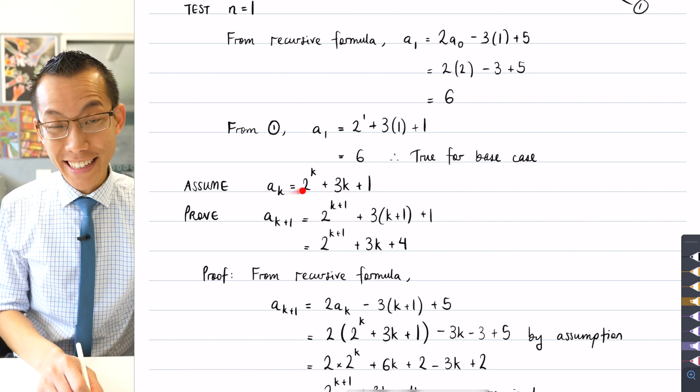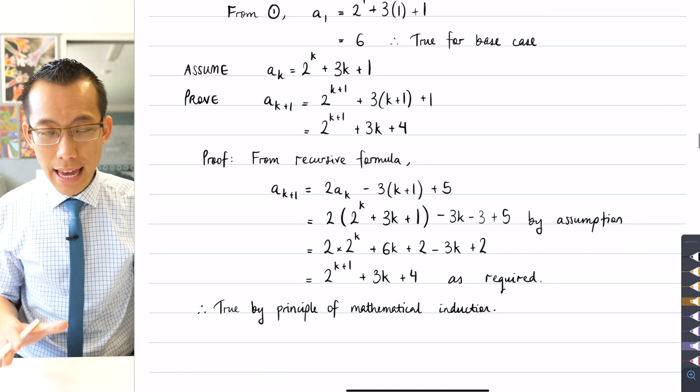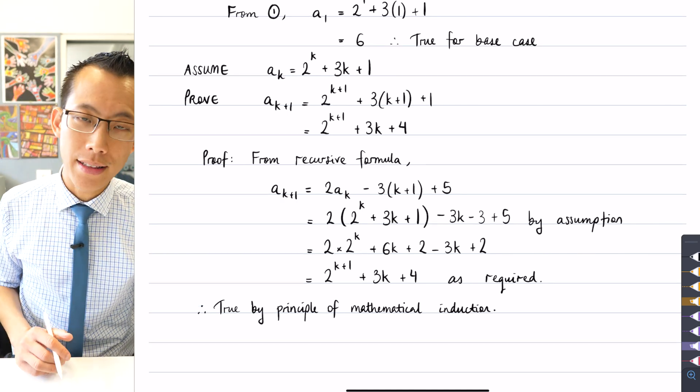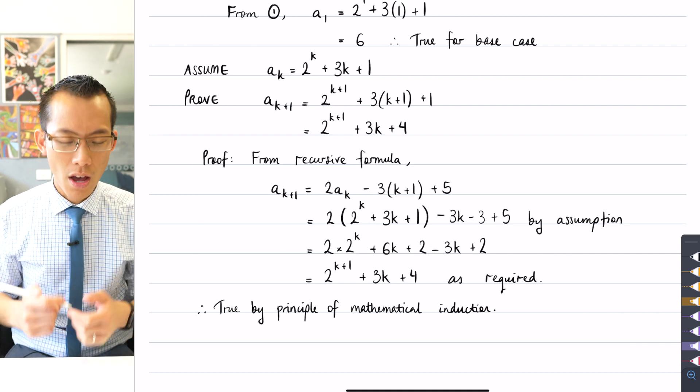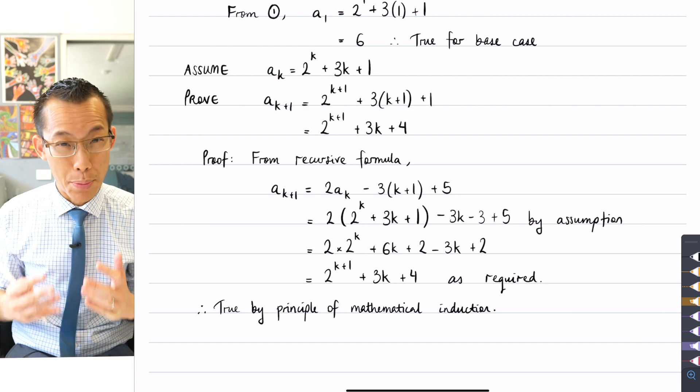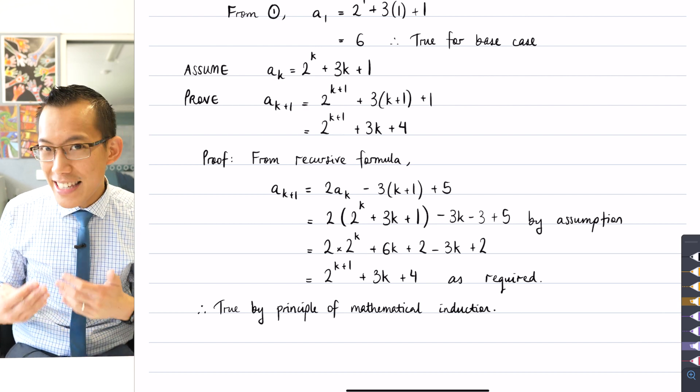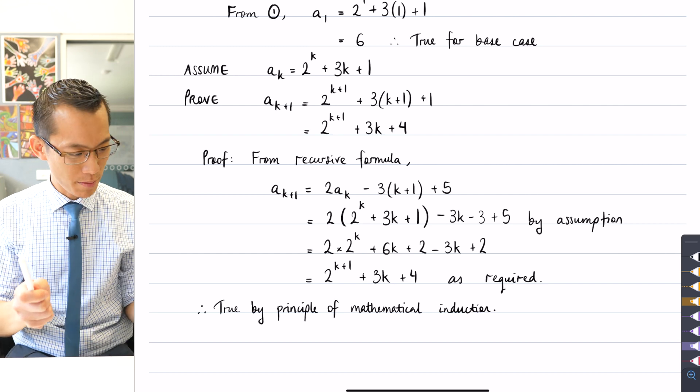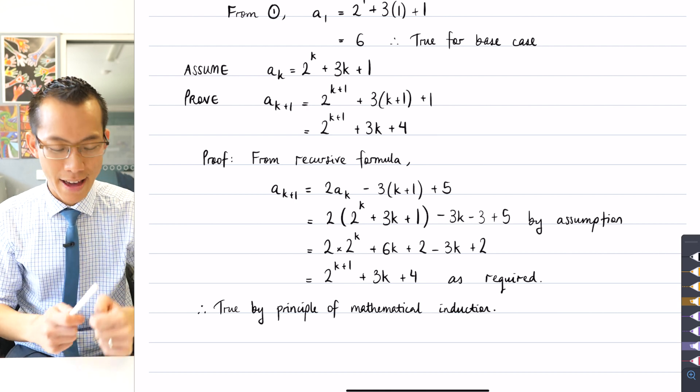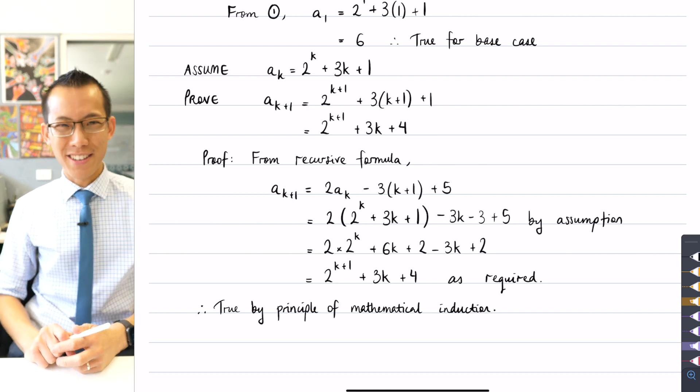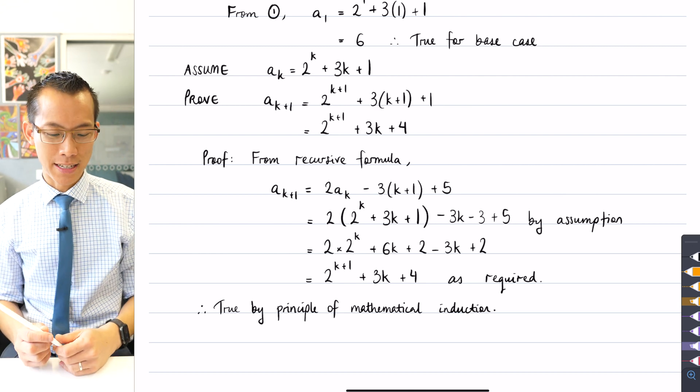The assumption hardly takes any time at all, but then I get into the proof step. Now it doesn't take that many lines of working, certainly far less than the previous proof by induction that we saw, and that's because, as I pointed out at the beginning of this question, recursive formulas are kind of built for proof by induction because induction is itself a recursive process. It establishes something and then looks back at that and uses that to establish a new thing. Because mathematical induction is recursive by nature, recursive formulas are just mincemeat for this particular method.